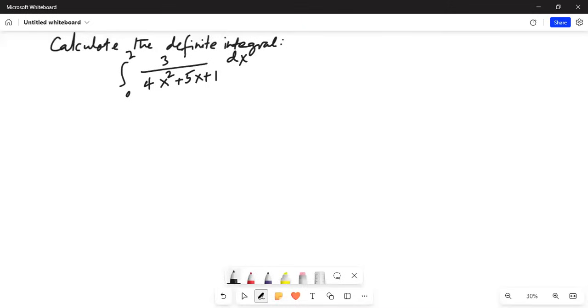Good day everybody, how are you all? Today we are going to talk about definite integral using partial fractions. I'll share my computer screen with you. Let's calculate the definite integral. The limits of integration are from 0 to 2 and we have to integrate 3 divided by 4x square plus 5x plus 1 dx.